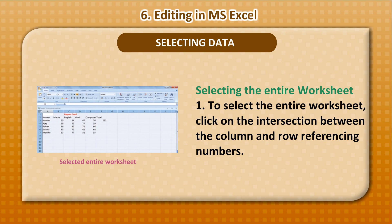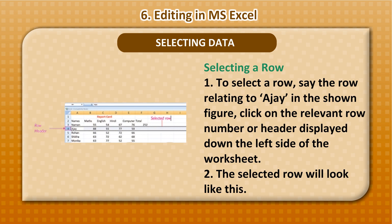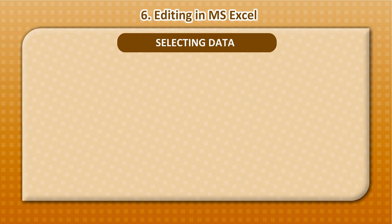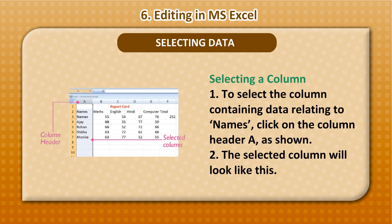Selecting the Entire Worksheet: To select the entire worksheet, click on the intersection between the column and row referencing numbers. Selecting a Row: To select a row, click on the relevant row number displayed on the left side of the worksheet. To select a column, click on the column header, such as column header A, and the selected column will be highlighted.